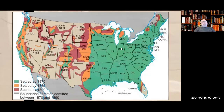So every 10 years there's a count made to decide who gets what representatives. For example, last year we did the census, and what we'll probably see is that California lost population and Texas gained population, which means California may lose representatives and Texas will gain representatives. That's the whole purpose of doing the census.